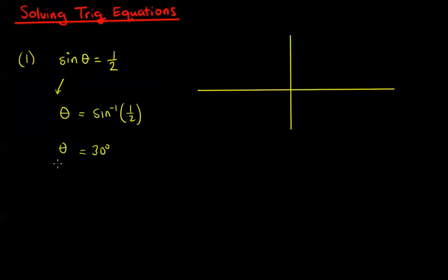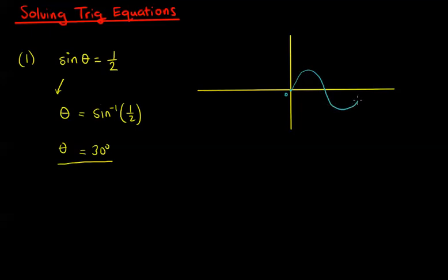But this is one of many answers. There are other angles that also give us a half when we take the sine of it, and we can see that from the graph. So let's make a sketch of the sine function and try to find some other possible answers. Remember, sine starts at 0, and then it goes up and down, and then it repeats itself up and down, and so on. It does the same on the negative side as well.